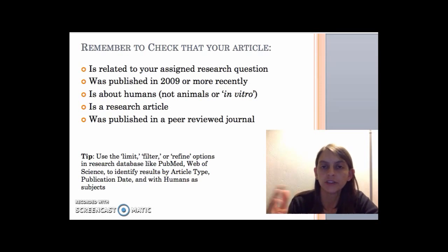So when you choose an article for your assignment for this class, also remember to check that it's related to the assigned research question, that it was published in 2009 or more recently, that it's about humans, not animal research. It's a research article, one of the types we just discussed, and that it was published in a peer-reviewed journal.